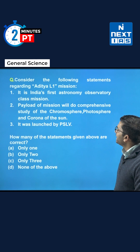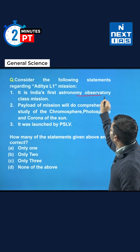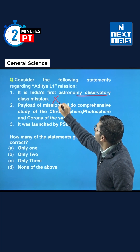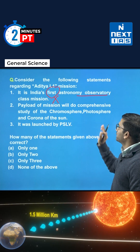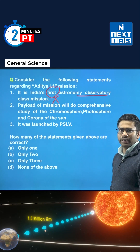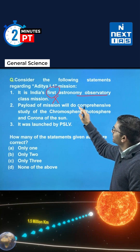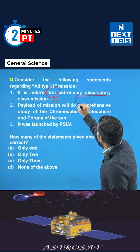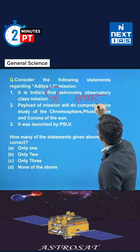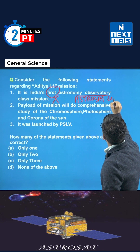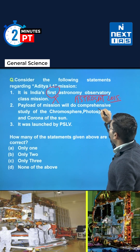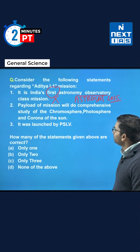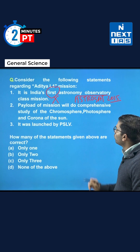The first statement says that it is India's first astronomy observatory class mission. This statement is false because it is not India's first — it is the second one. Before this, AstroSat was launched in 2015, and a question on AstroSat was also asked previously.